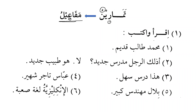Let's begin the exercise: iqra' wa-ktub — read and write. In this lesson we are learning about masuf and sifa, the noun and the adjective. We know that noun and adjective — masuf and sifa — are equal in four properties of the noun: the CGNS analysis — capacity, gender, number, and status. The noun and adjective must be equal in these four properties.